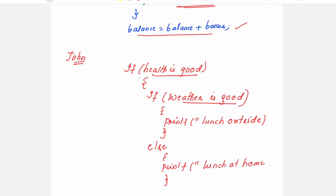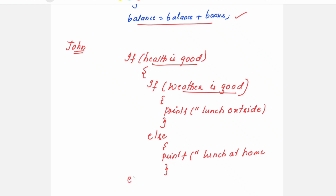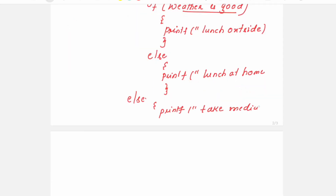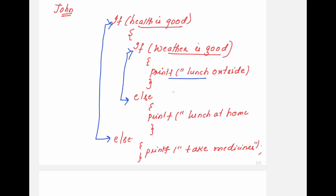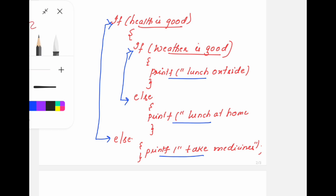Suppose if health — the first condition — is false, then for the outer if we write the else part: he will take medicines. This is how nesting of if-else is used when we have to test more than one condition. This is the outer if and this is the inner if. Whether the block for the inner if executes, or the else part of the inner if executes, or the else part of the outer if executes — in all three cases, the last statement, statement x, will be printed.